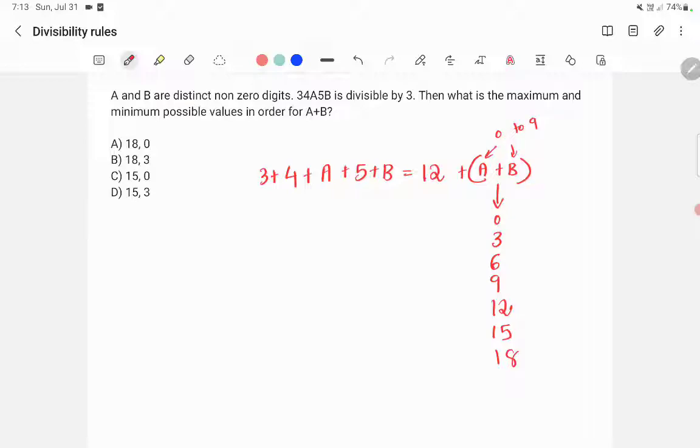When A and B are both 9, which is the maximum value, the total value of A plus B will become 18. So you shouldn't take 21 as a possibility because 21 will not come. The maximum value possibly is 18 and minimum value possibly is 0.